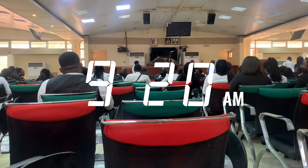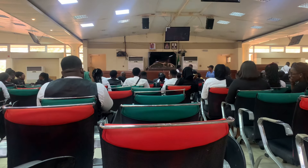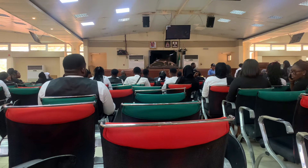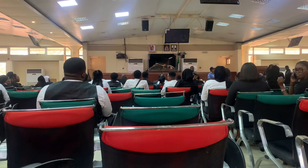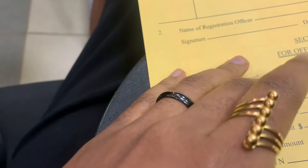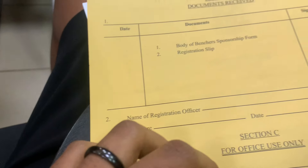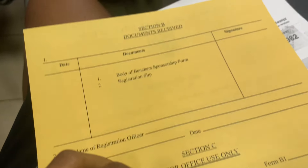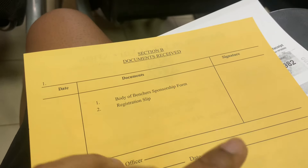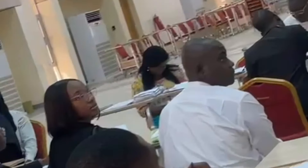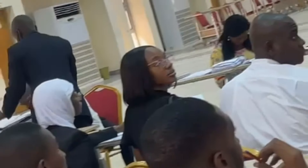We were actually supposed to start at 9 AM but after waiting for an hour plus, they decided to share the yellow form. This form is basically what we attach to those documents I mentioned earlier to get registered. That took some time — like about an hour or two hours. Then I finished up and went to student affairs immediately.